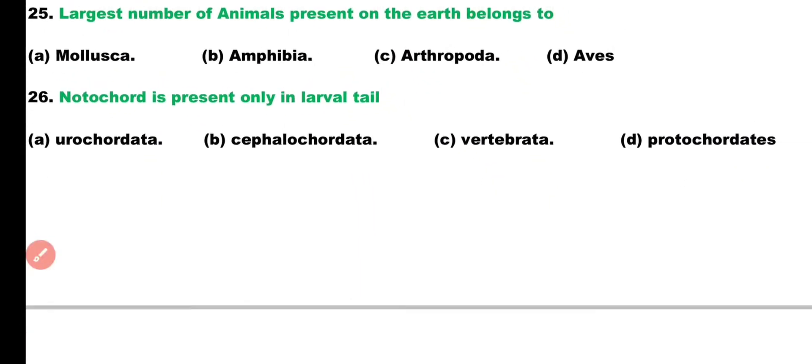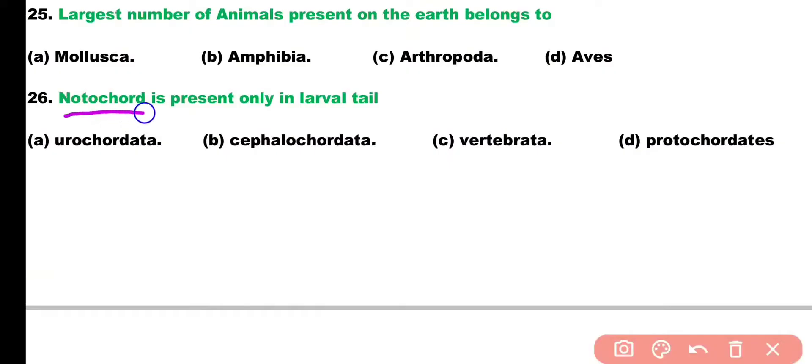Question number 26. Notochord is present only in larval tail in case of: Urochordata, Cephalochordata, Vertebrata, or Protochordata? Correct answer is Option A. In Urochordates, the notochord is present only in the larval tail.